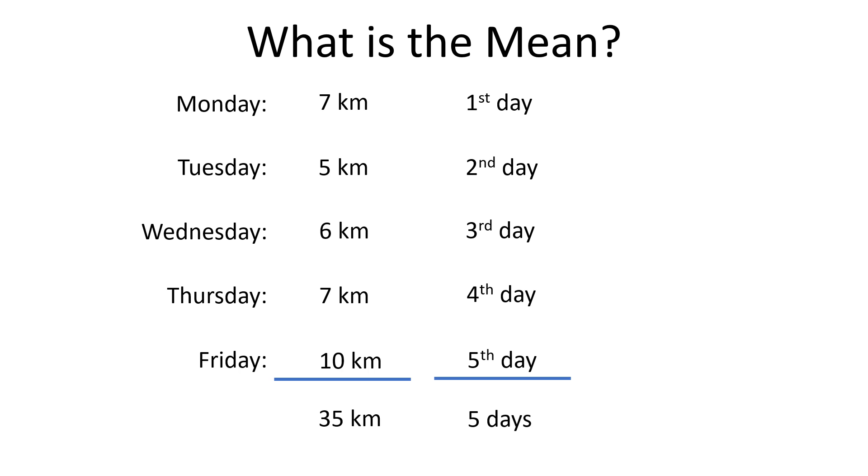Let's look at the data we collected. We recorded the distance the ant walked. This collection of information is called a data set. Over that time, the ant traveled a total distance of 35 kilometers. The information was recorded over a period of 5 days.